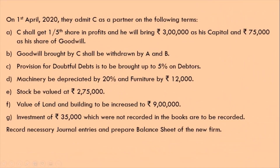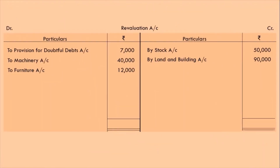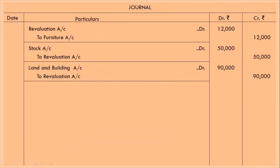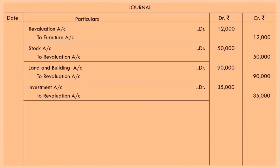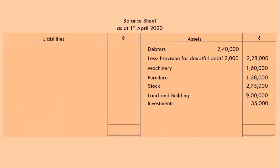Next adjustment: investment of Rs 35,000 were not recorded in the books, are to be recorded — we have got an unrecorded asset. As we are gaining, it will be recorded on the credit side of revaluation account: by investment Rs 35,000. The journal entry is: investment account debit, to revaluation account — as investment is an asset, it will be debited. In the balance sheet, we will write investment Rs 35,000.